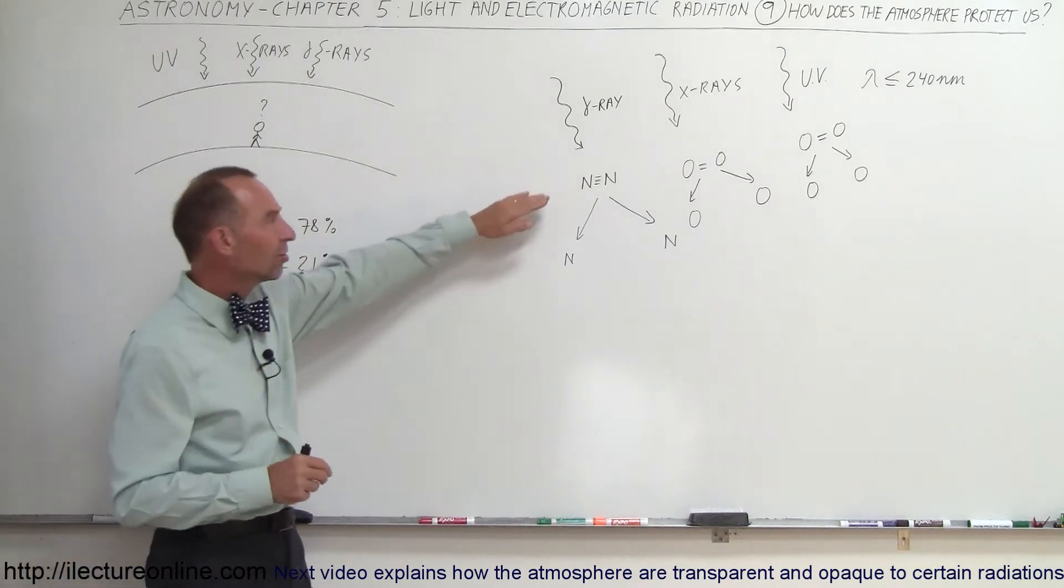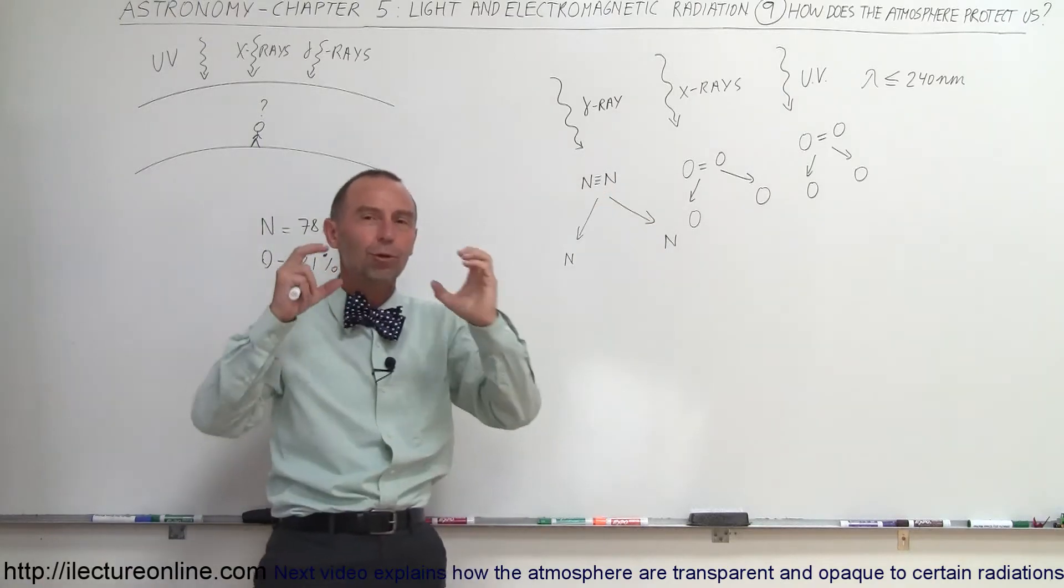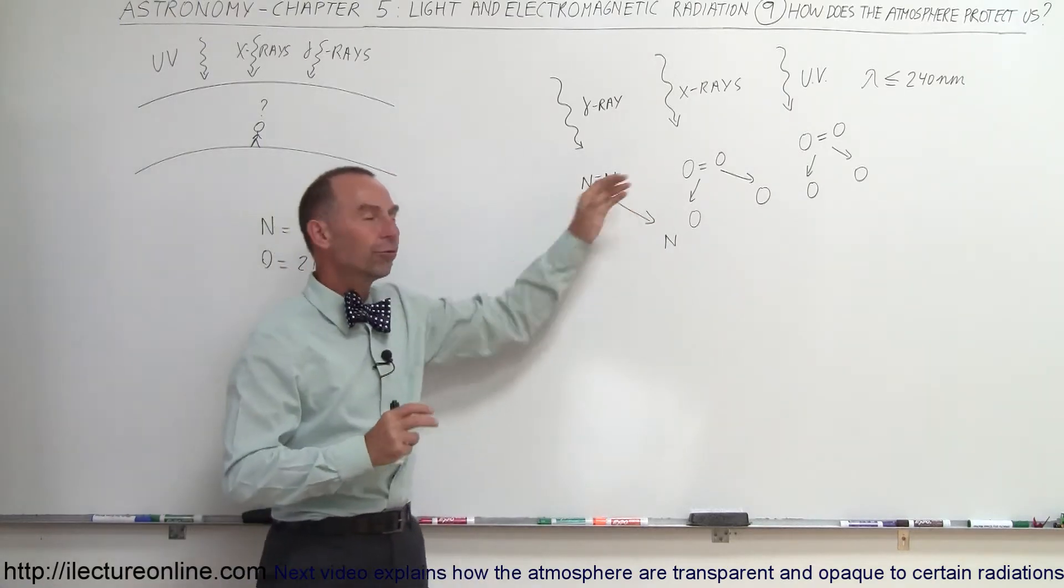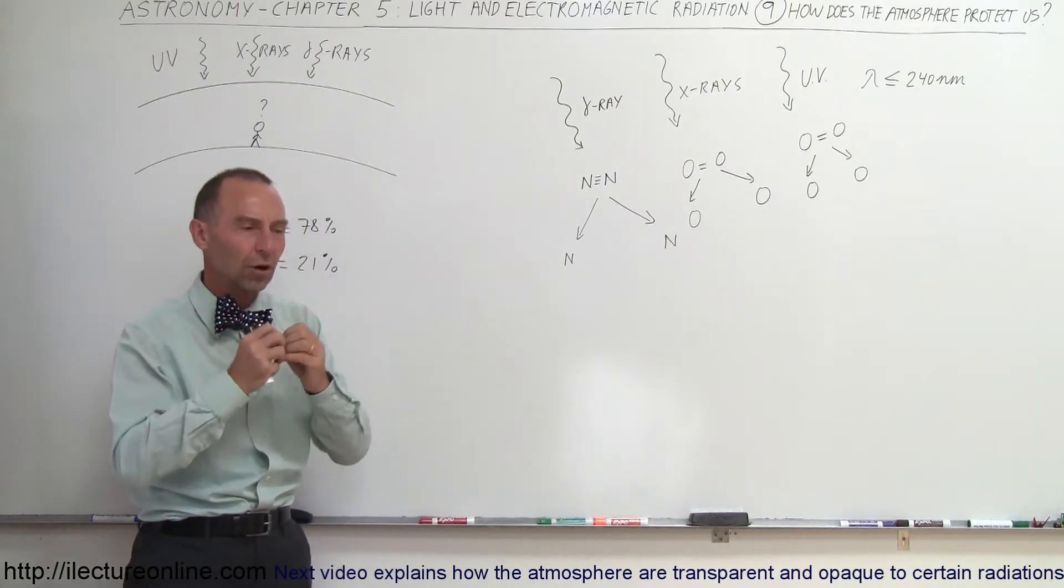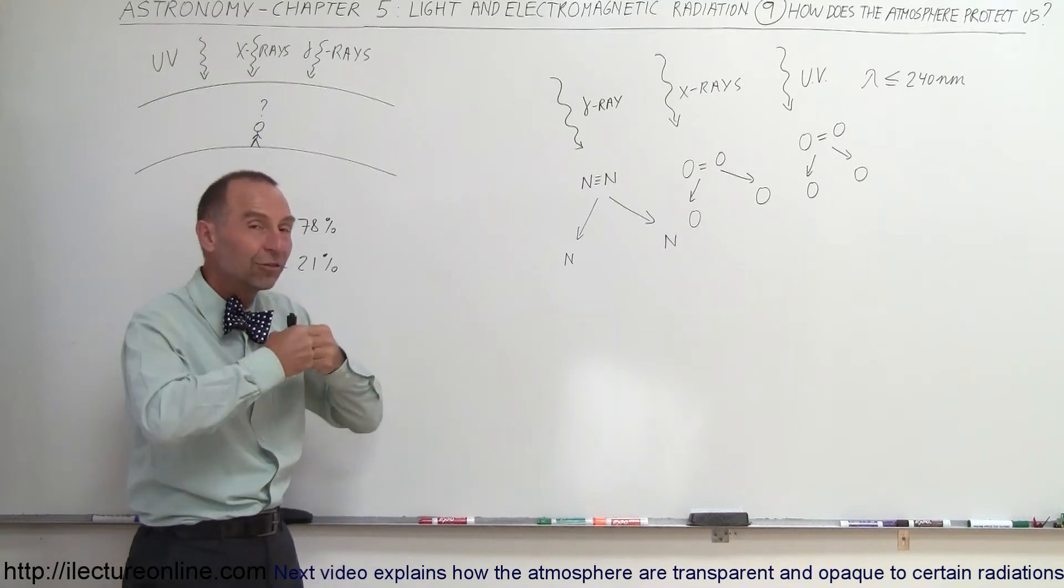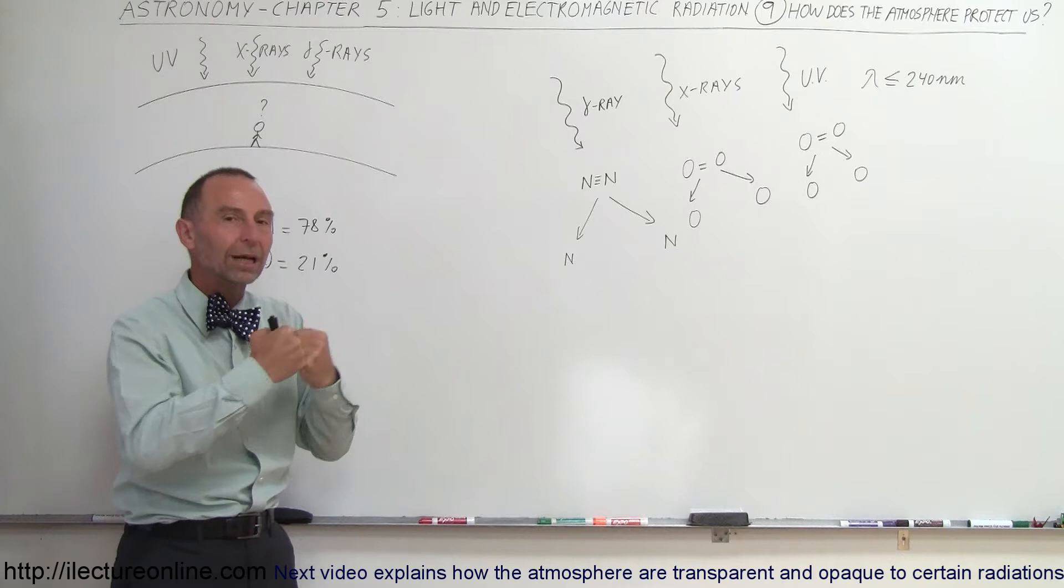Nitrogen exists in diatomic molecules and so does oxygen. They form bonds with each other. Oxygen forms a double bond, nitrogen forms a triple bond. The nitrogen bond is very, very strong. It holds very tightly together. It's very difficult chemically to separate the bonds that hold the two nitrogens together.